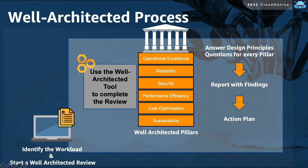The process usually starts by identifying a specific workload and planning to undergo a well-architected review. You then use the AWS Management Console to launch the well-architected tool, define the workload details, and start answering questions covering the different design principles of all six pillars. Upon completing the questionnaire, you will get a report of the findings and issues identified by the tool as deviations from the recommendations and best practices. You then use this report to put an action plan to start your remediation and enhancement actions to optimize the application state and architecture.